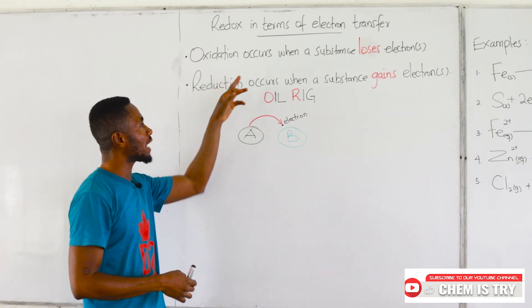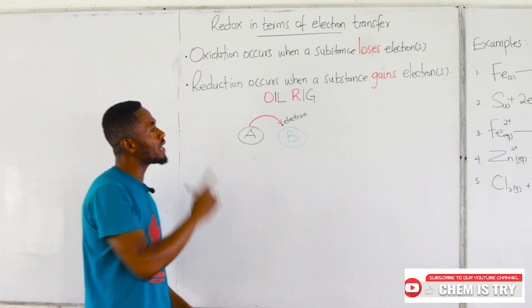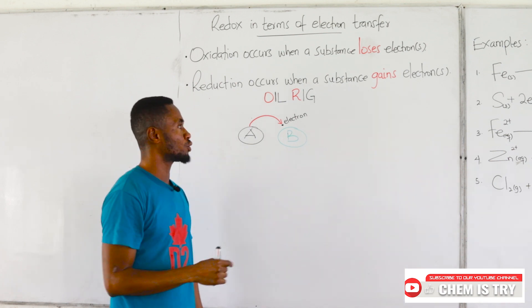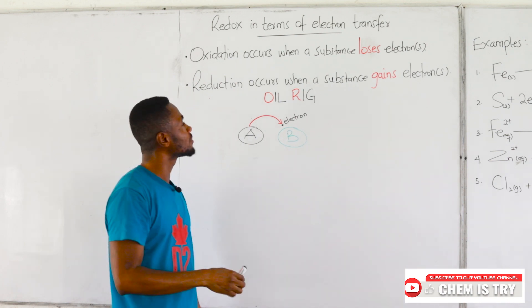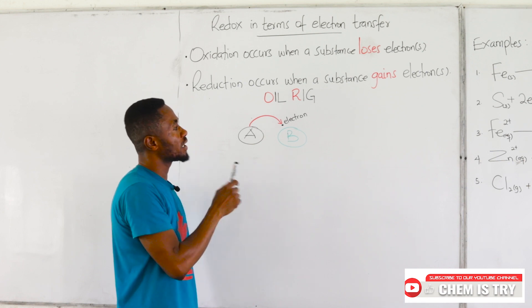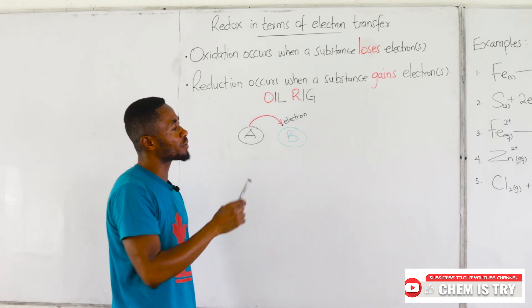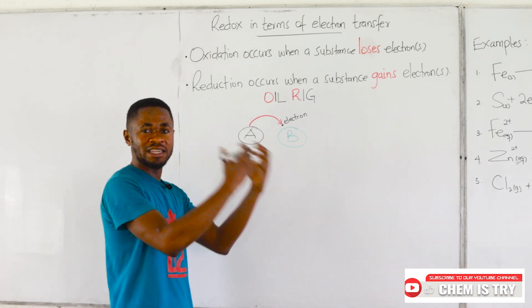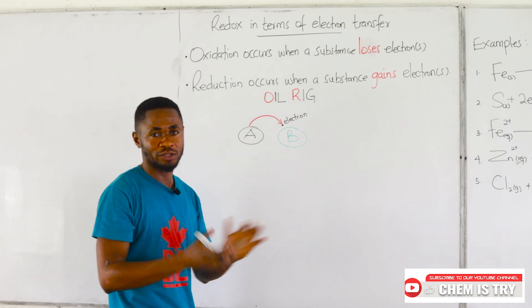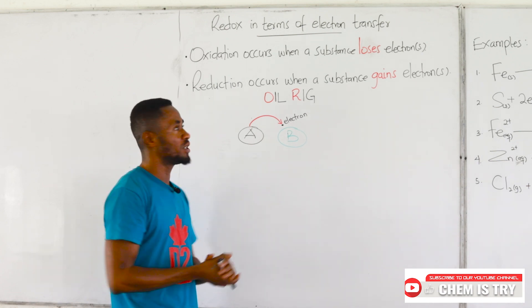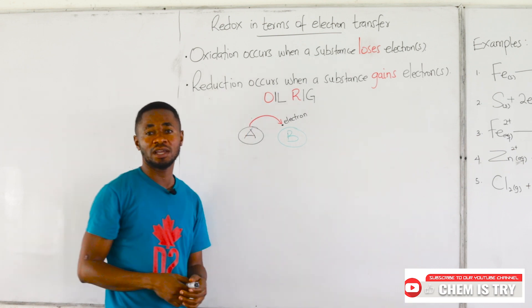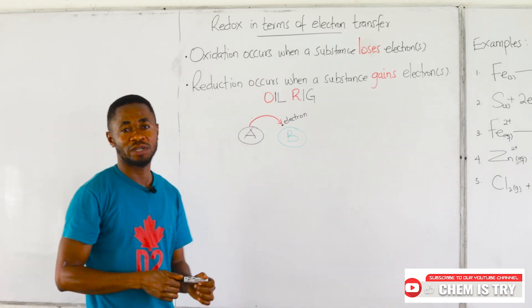Oxidation occurs when a substance loses an electron or electrons. Reduction occurs when a substance gains an electron or electrons. So these are the two definitions for oxidation and reduction in terms of electron transfer.